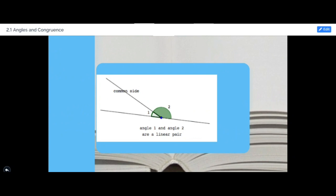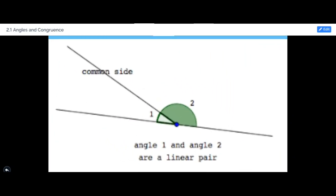Another special angle pair is linear pair. Linear pairs of angles make 180 degrees if we sum them. Linear pairs are adjacent angles that add up to 180 degrees.